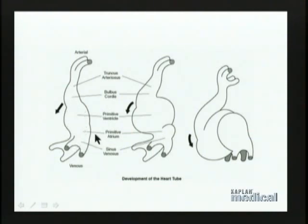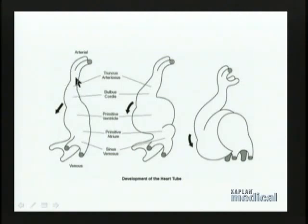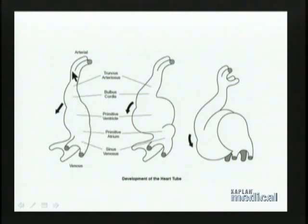The middle portion of the tube will become the heart. The upper portion of the tube, which is carrying blood away from the heart, will by definition be arteries, since that's what carries blood away from the heart. So the lower portion becomes veins, the middle becomes heart, and the upper becomes arteries.